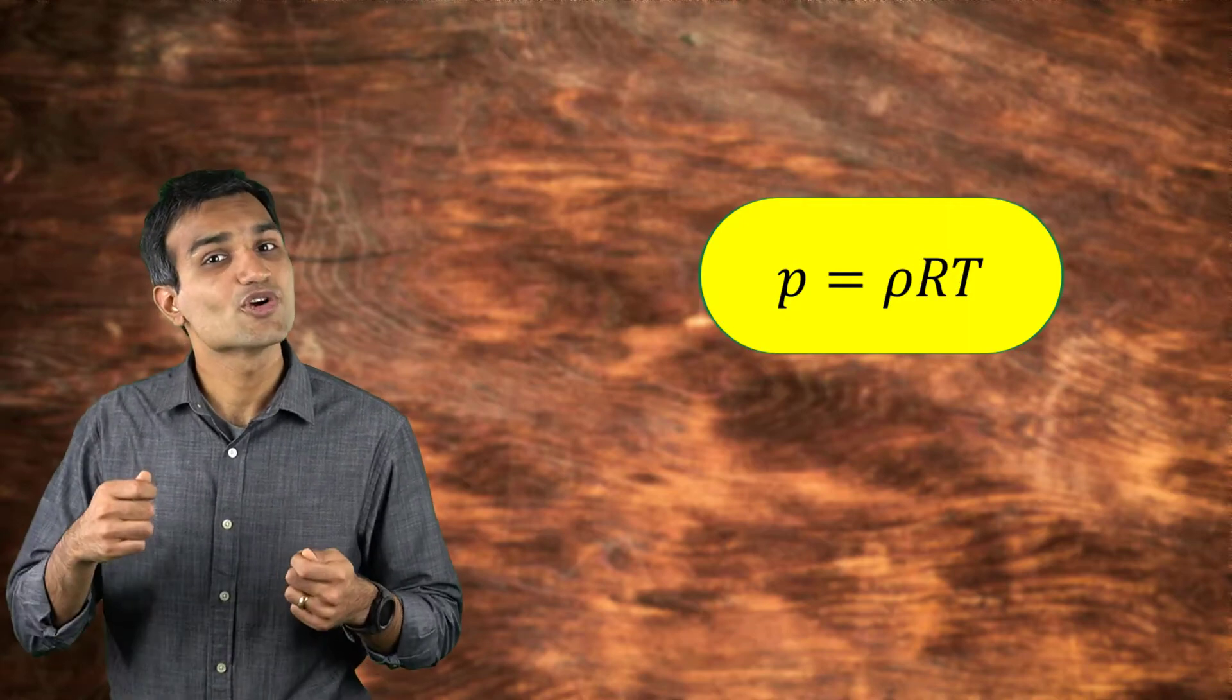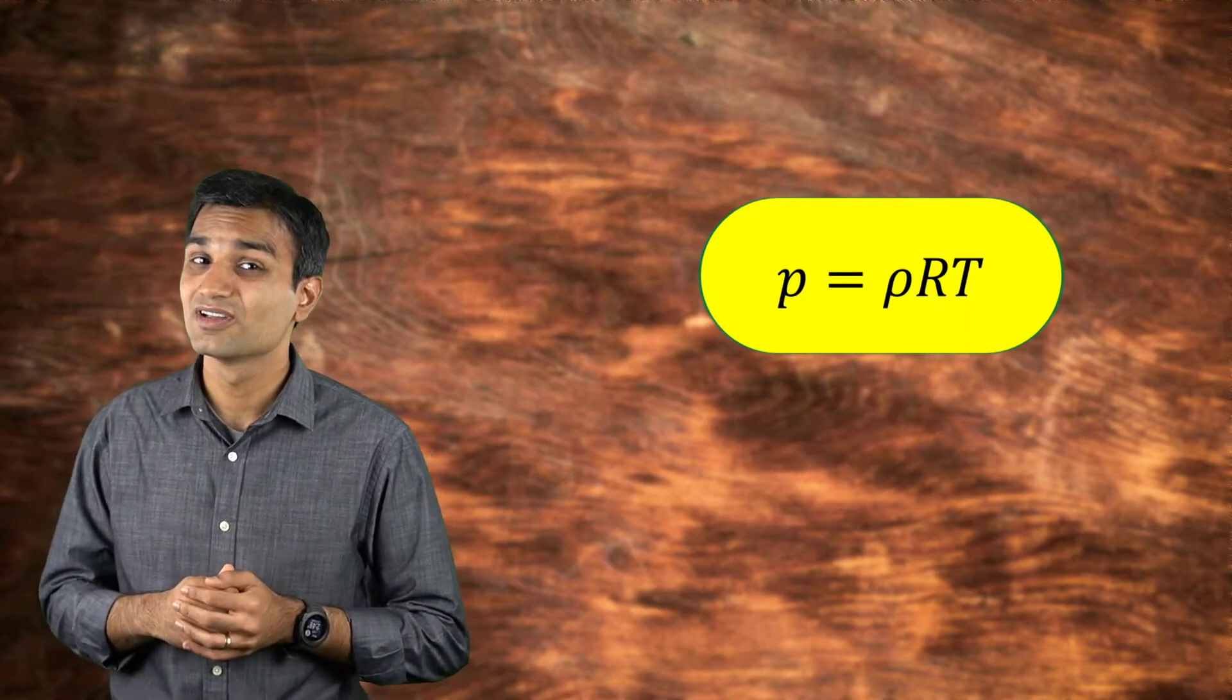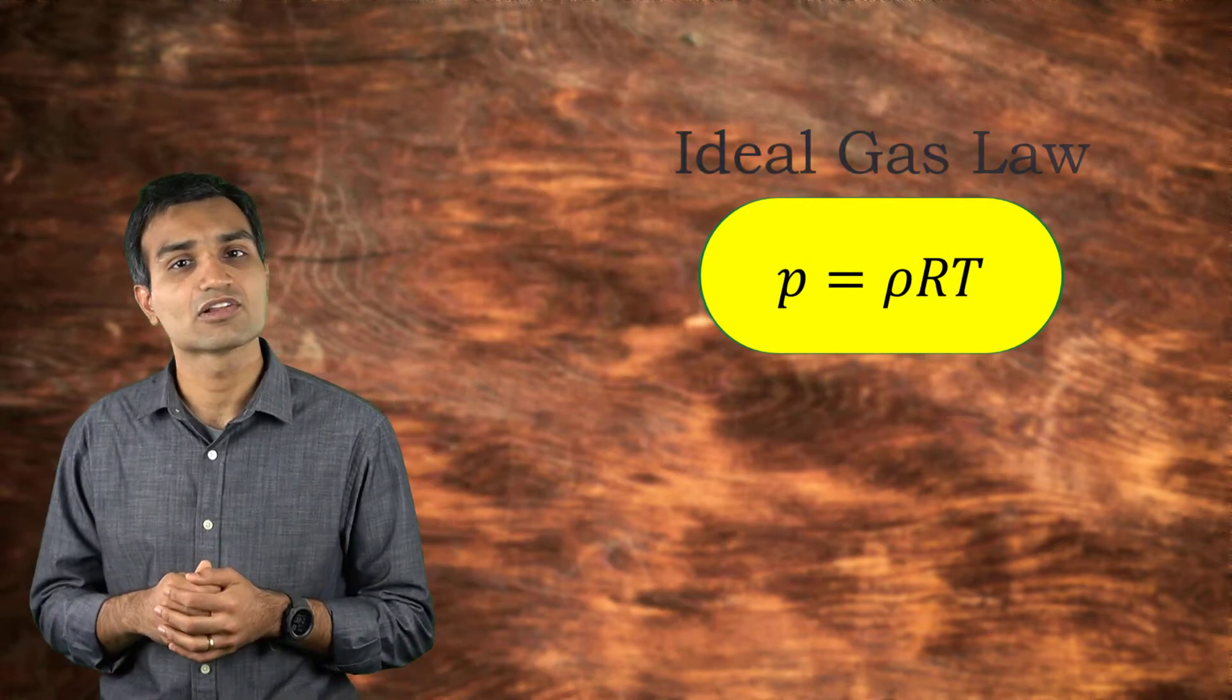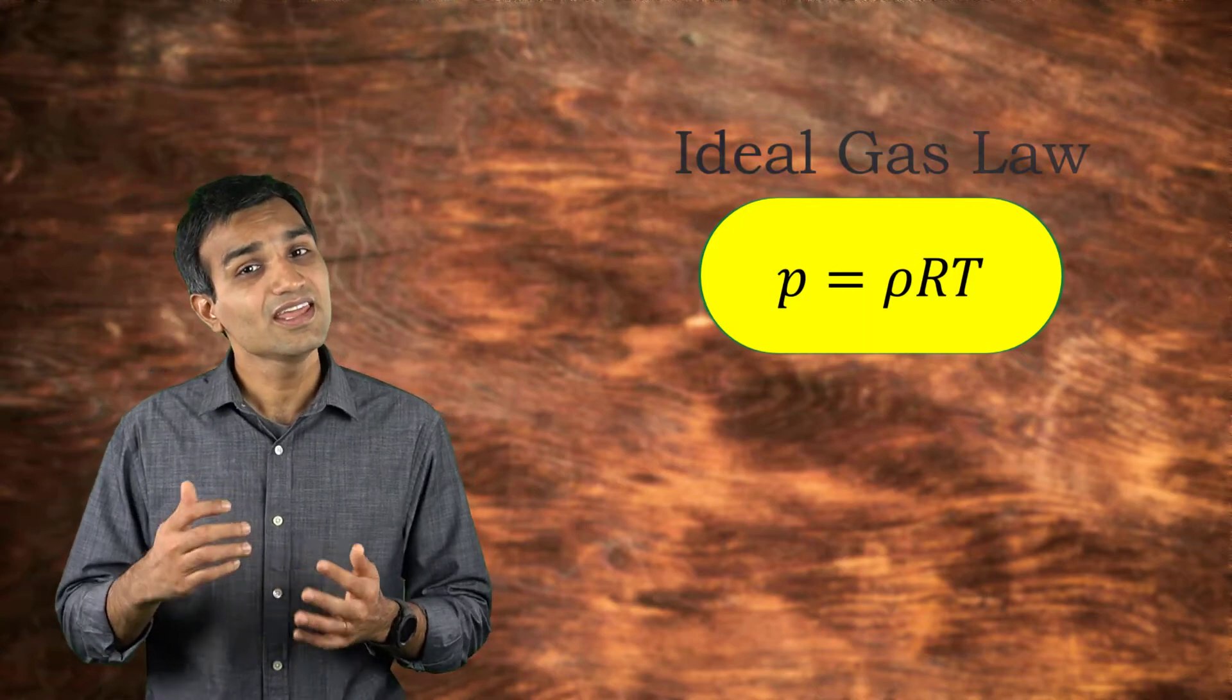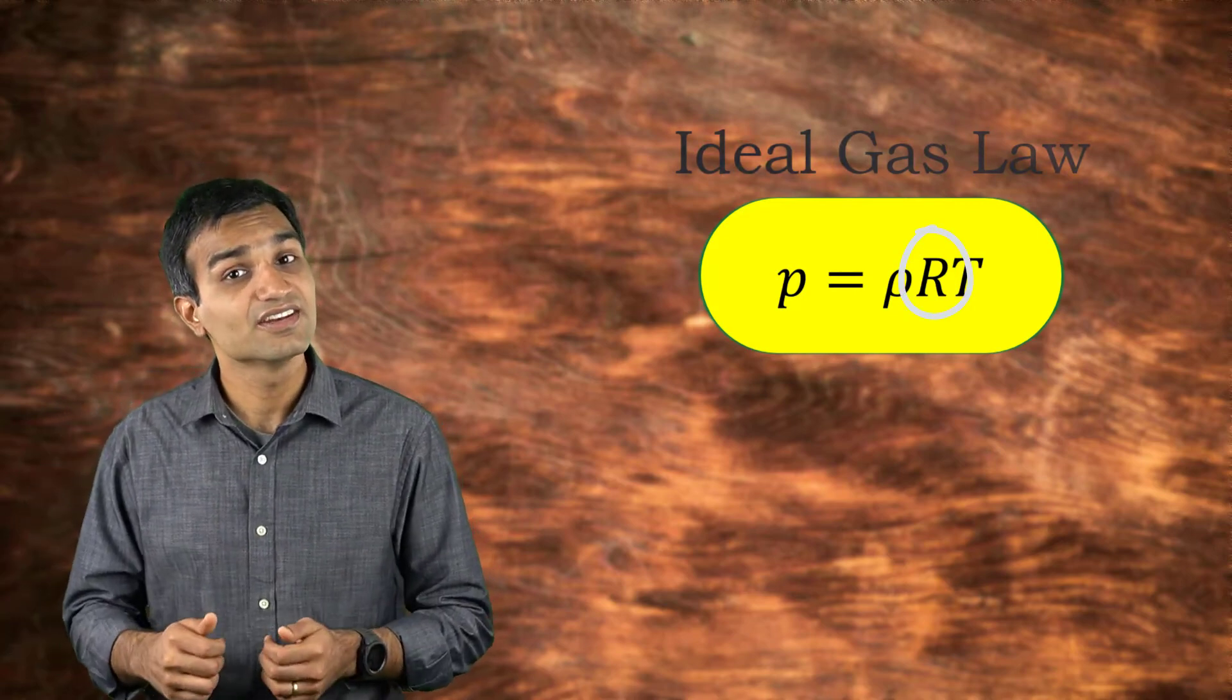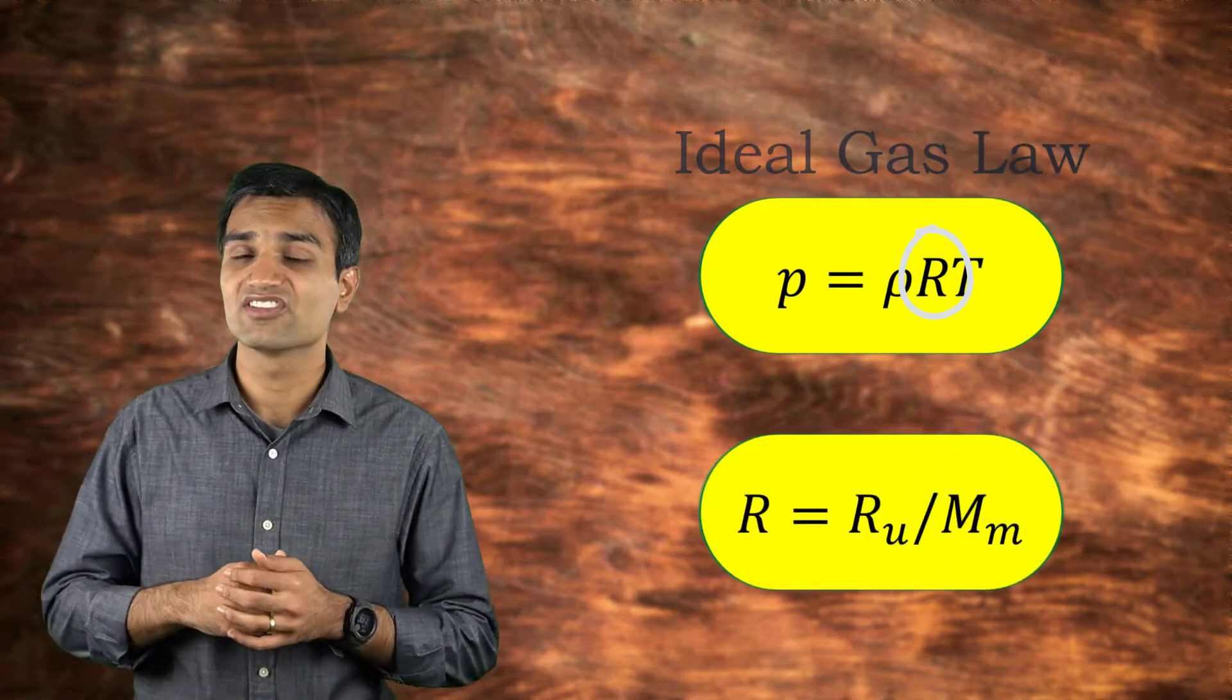Many substances show complex behaviors. However, under moderate pressures and temperatures, these behaviors are idealized and simplified using the ideal gas law, which states the following. Here, the gas constant is uniquely defined for each gas and is related to the molecular mass of the gas. R sub U is the universal gas constant.